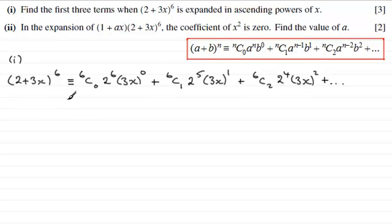Now, it's just a question of working these values out. The nC function you'll find on most scientific calculators, so when you type in 6C0 you should find you get 1. 6C1 is 6 and 6C2 is 15. So do check that out that you're getting those values. So for this first term we just got 1 multiplied by 2 to the power 6, which is 64, and anything to the power 0 is 1, so you just end up with 64 there.